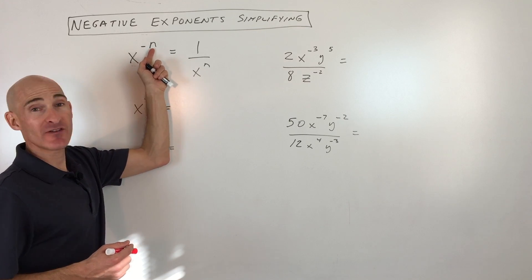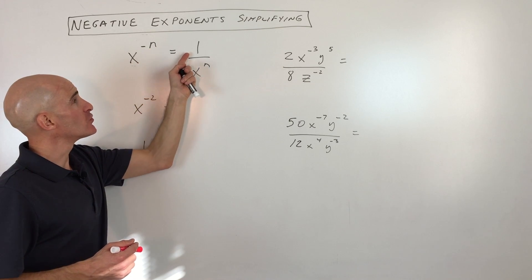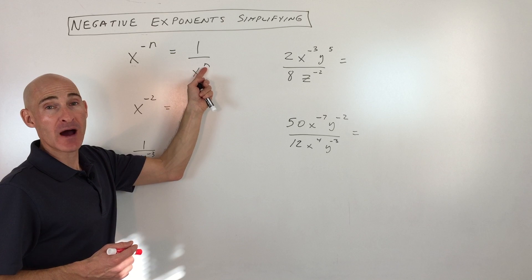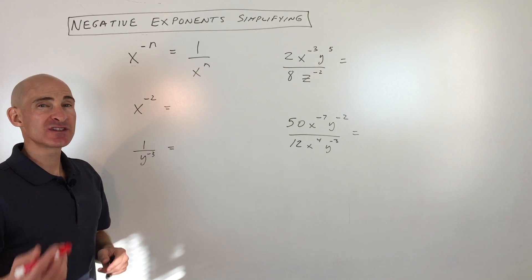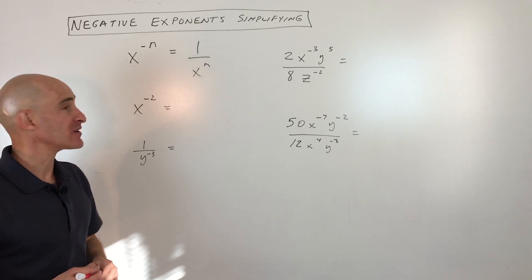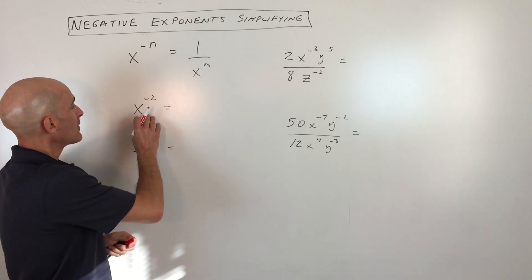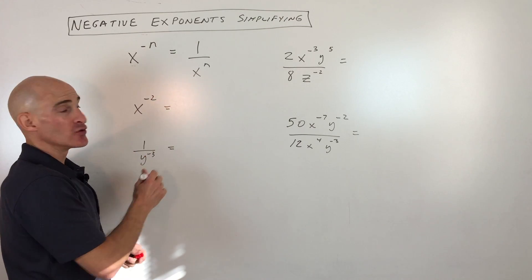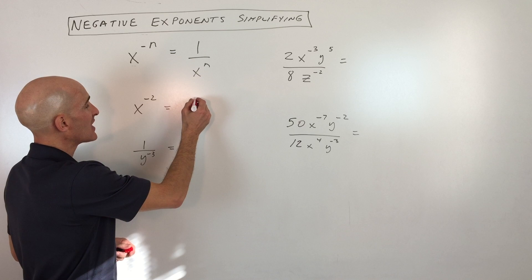When you have x to the negative n power, that's equivalent to 1 over x to the positive n. So let's see how we can utilize this formula to help us. First of all, let's take a look at this one: x to the negative 2. So if we use the formula, this is just saying 1 over x to the positive 2, and we're done.